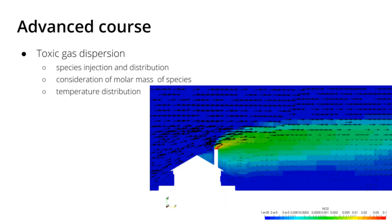For the toxic gas dispersion simulations, you can model a suspicious injection, and you can see here a typical distribution of, for example, NO2 at the outlet of a chimney.